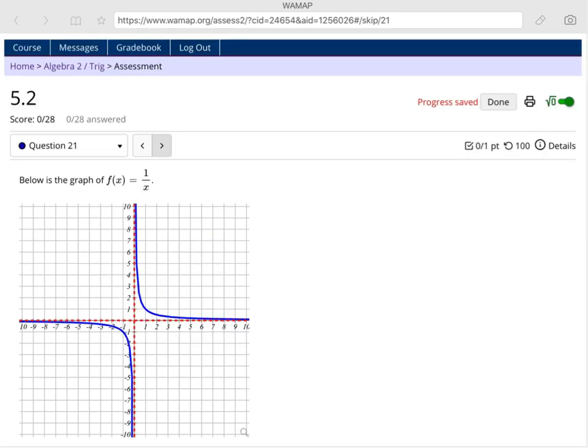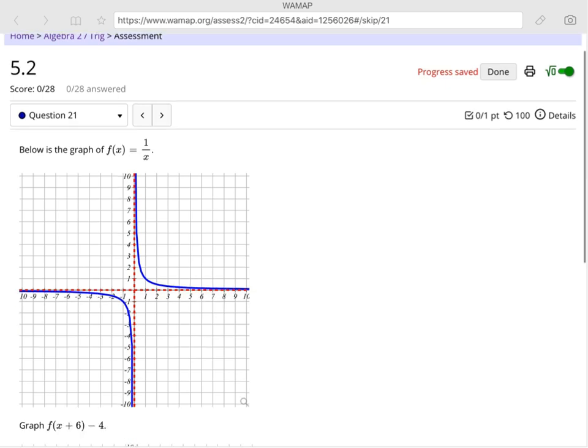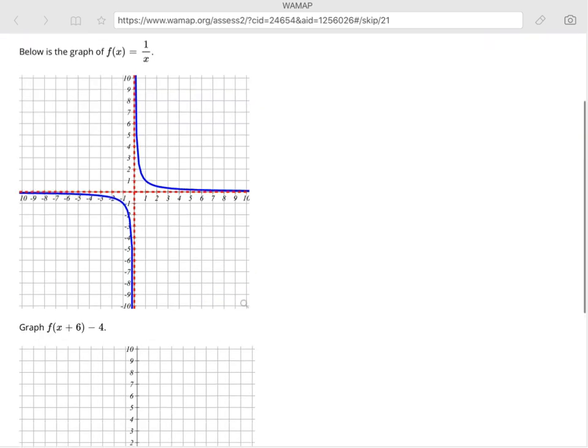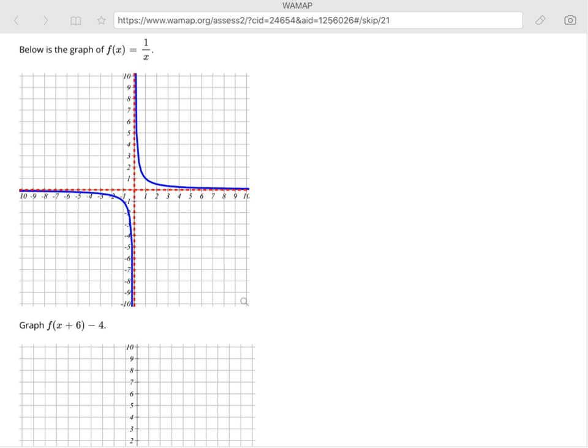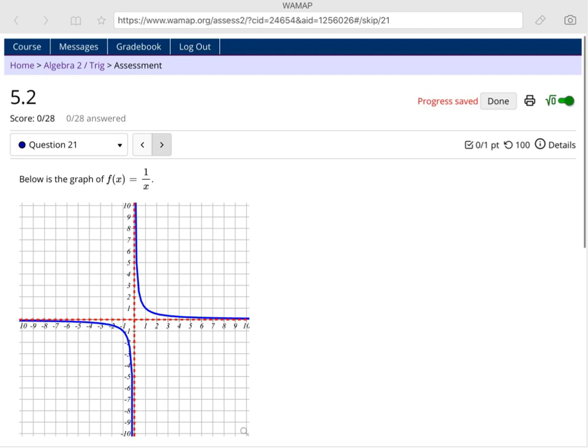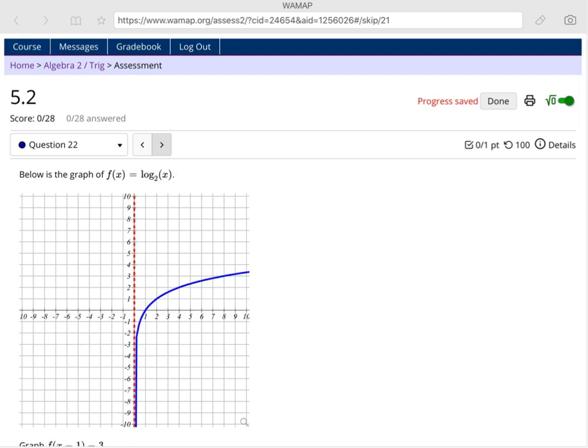And if we take a look at some of the other problems you're going to be seeing through here, you're going to see all those same function types coming back. Just each one is going to be showing up with two different transformations. So just make sure you're applying both transformations each time, and you're going to be in good shape no matter what type of graph pops up.